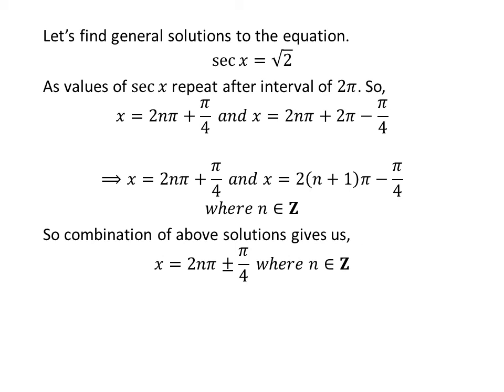Combining the above solutions gives us the general solution of the equation as 2nπ ± π/4, where n is an integer.